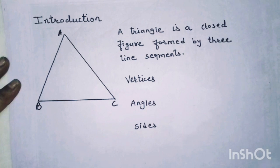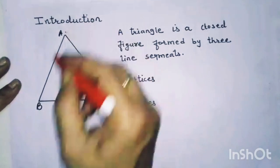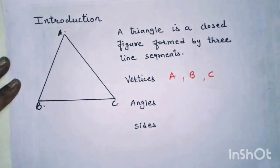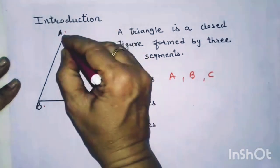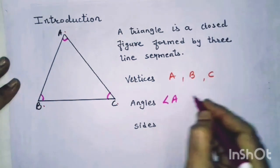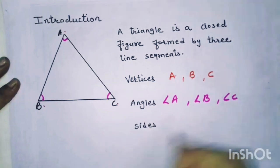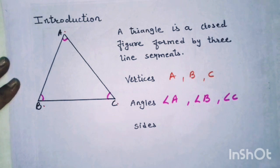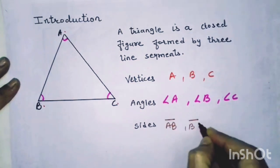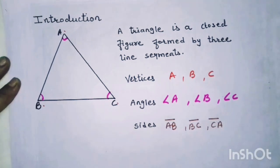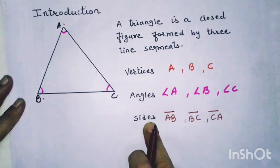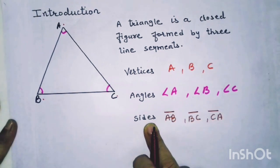Understood? And which are the vertices of the triangle? So A, B and C are the vertices of a triangle. Now angle A, angle B and angle C are the 3 angles of a triangle. And which are the sides? As I said earlier, line segment AB, line segment BC and line segment CA are the 3 sides of a triangle. Now children, vertices, angles and sides are known as the elements of the triangle.